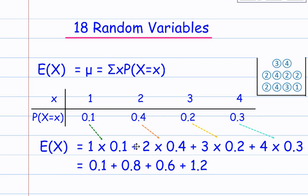So that gives you 0.1, 0.8, 0.6, and 1.2, which when you add it all together is 2.7.